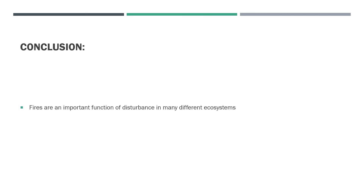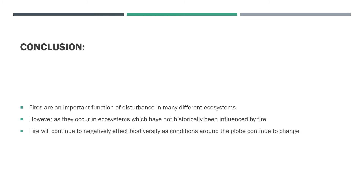To conclude, it seems that fires can both negatively and positively affect the biodiversity of ecosystems. When fire occurs in areas where it has been present for thousands of years, it can be incredibly beneficial. However, when it occurs in ecosystems which are not suited to recover, regenerate, or resist its effects, the consequences for biodiversity can be disastrous. Going forward, it will be important to be vigilant protectors of the ecosystems which house so much of the world's biodiversity from the effects of ecosystem-destroying fires.